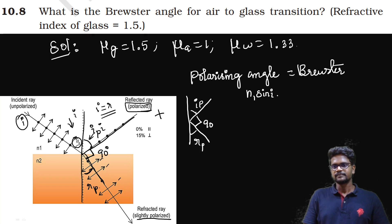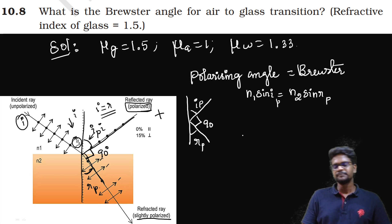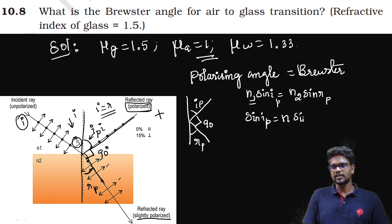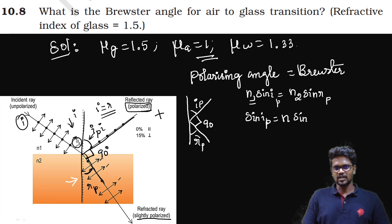We can use Snell's law formula: N1 sin I equals N2 sin R. This is at the polarizing angle, so it becomes N1 sin IP equals N2 sin RP. N1 is the first medium, which is air, so refractive index is 1, times sin IP, which equals N2 — which is glass — times sin RP. Now what is RP? Looking at the geometry, since the reflected and refracted rays are perpendicular, the straight line gives us 180 degrees.